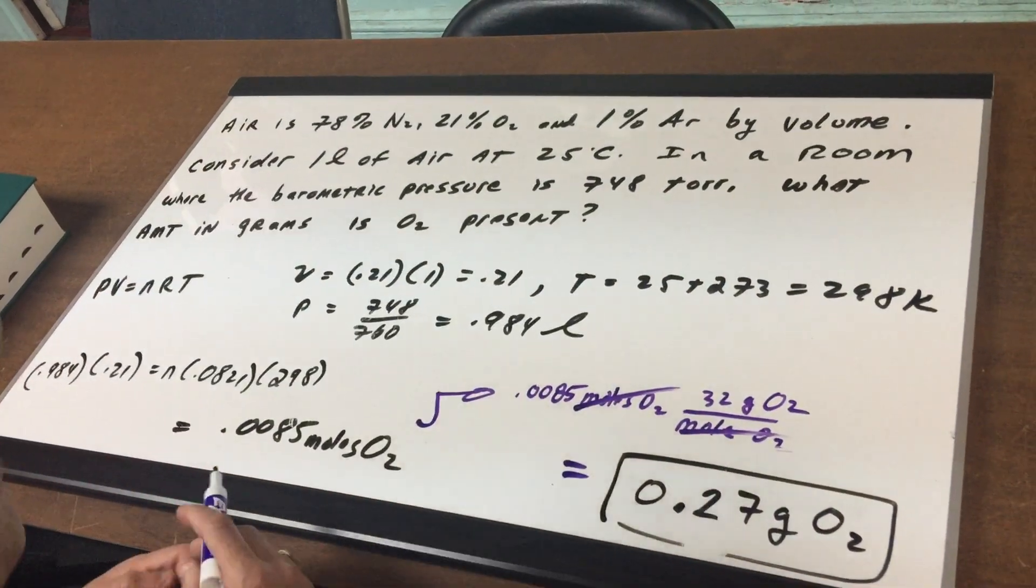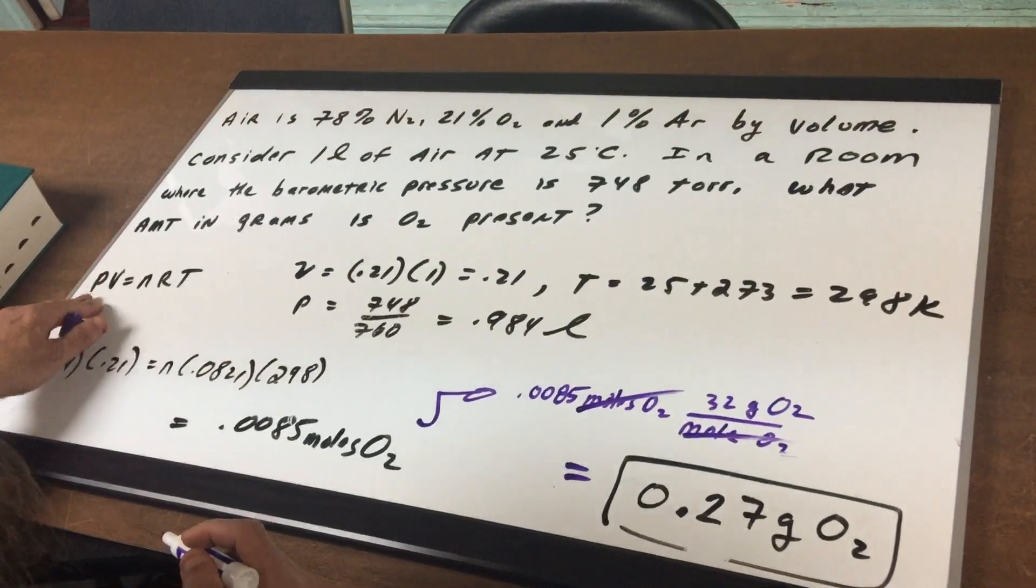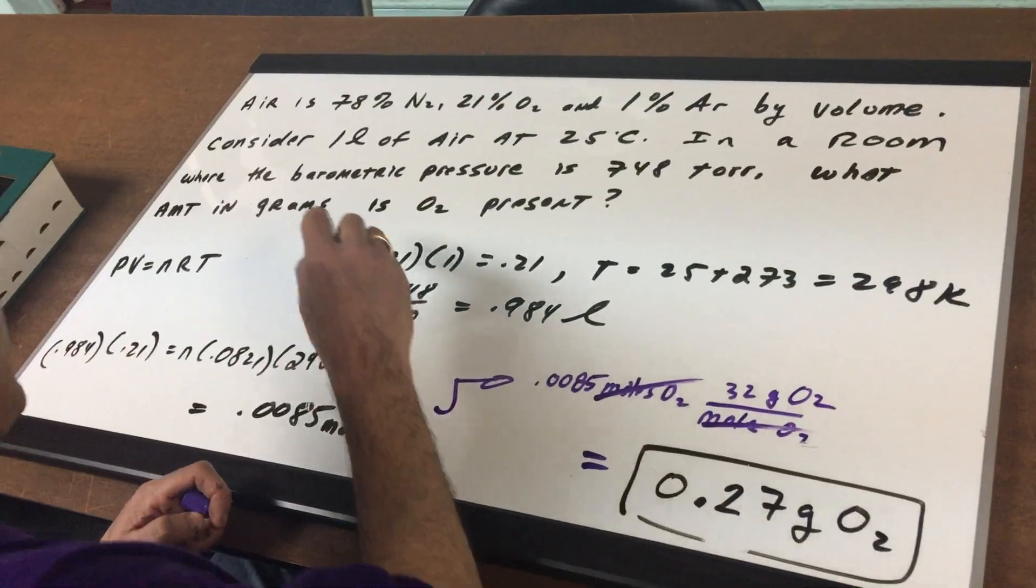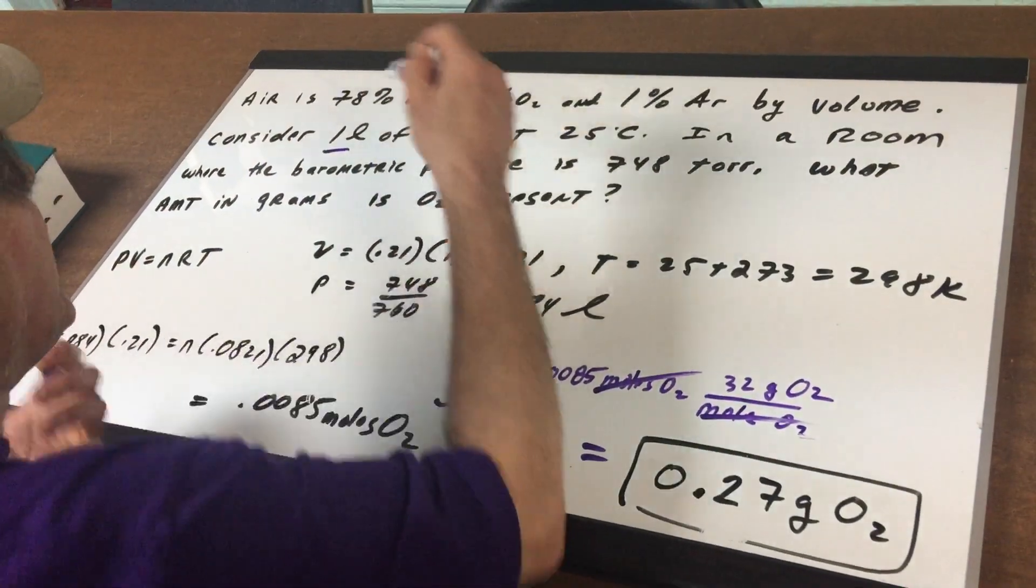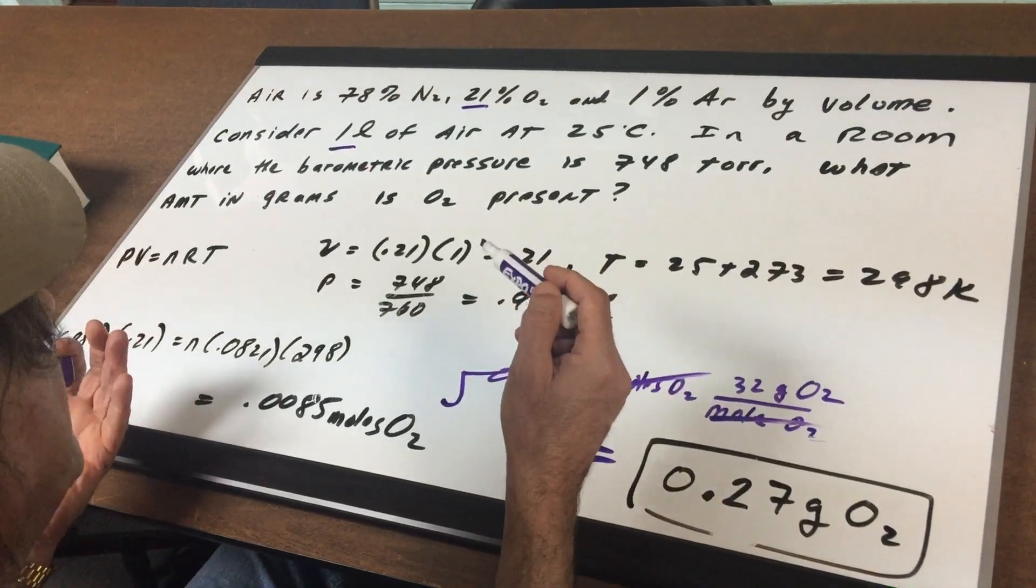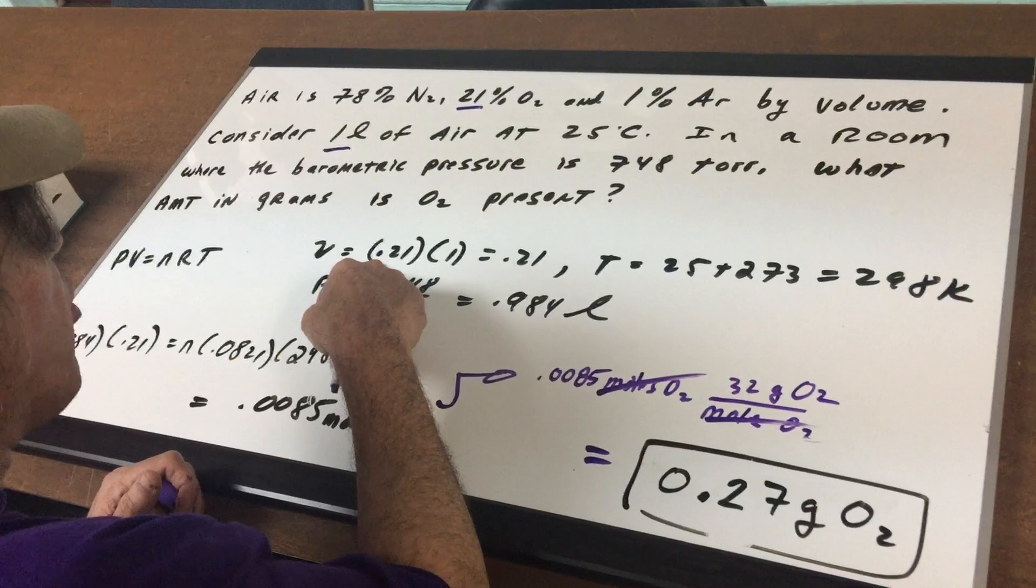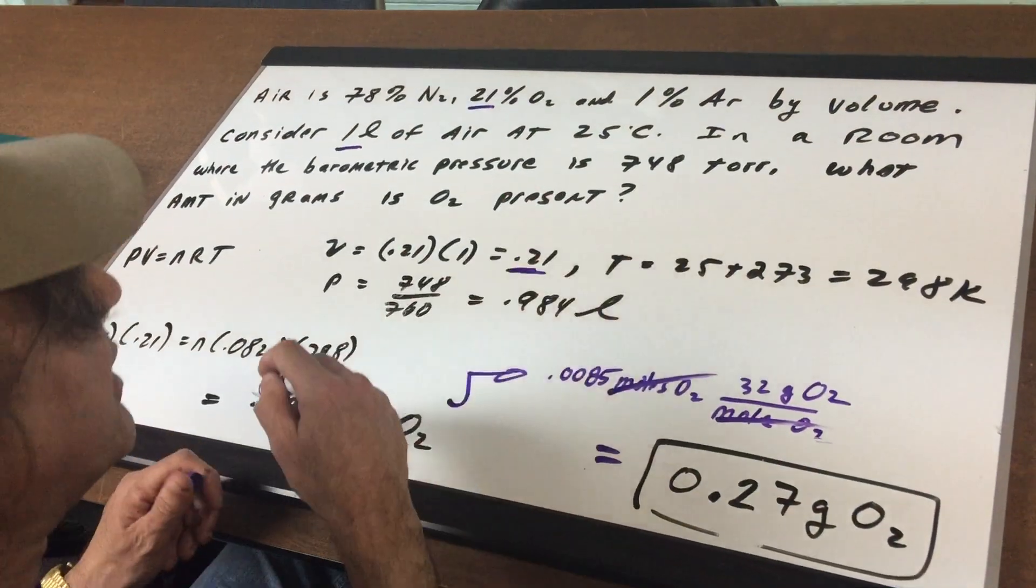The first thing when you hear grams or moles, we're going to write the ideal gas law which says PV equals NRT. We have one liter of air, but of that one liter, 21% is oxygen. So 21% or 0.21 times 1 gives me a volume of 0.21 liters.